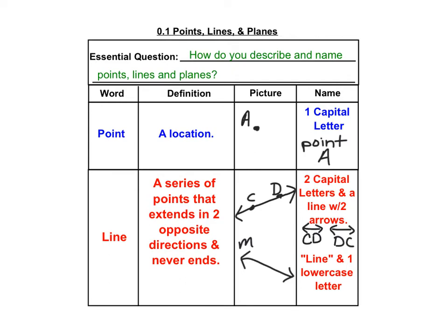The second way to name a line is just by a lowercase letter. Most of the time in diagrams, they're going to be italicized. So here we would say this is line. So you actually say the word line and then you say that lowercase letter. So we would call this line here line m.